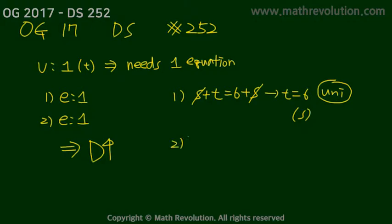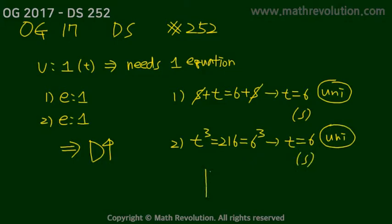Condition 2: T to the power of 3 equals 216, which equals 6 to the power of 3. Therefore, T must equal 6, and this is unique and sufficient as well. So the answer is choice D.